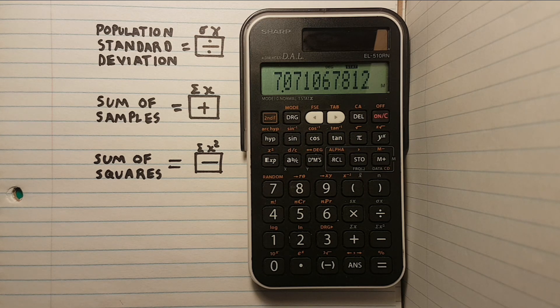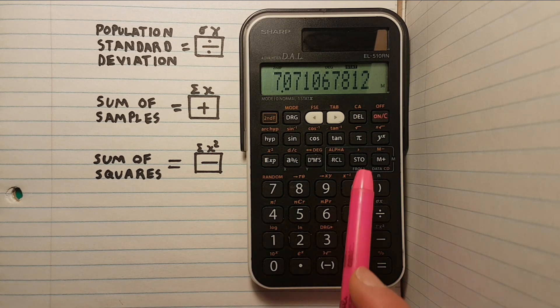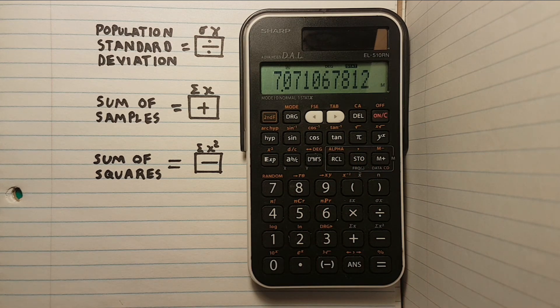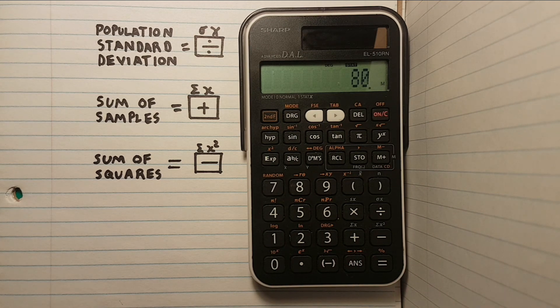If we want to find the sum of samples, we can press the second function key followed by the RCL key and then the plus key with the large sigma X above it. We now see large sigma X on the screen. If we hit equals, we get 80 which is the sum of all of our measurements in the data set.